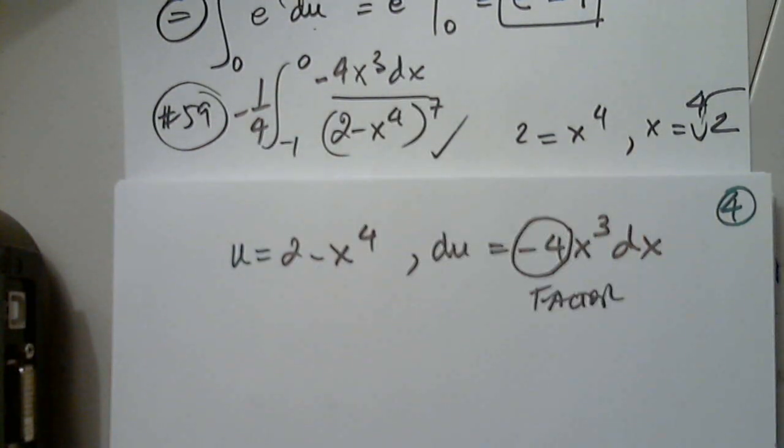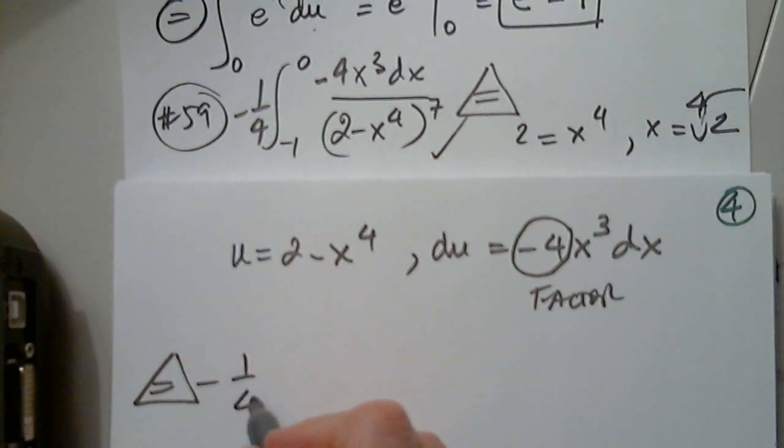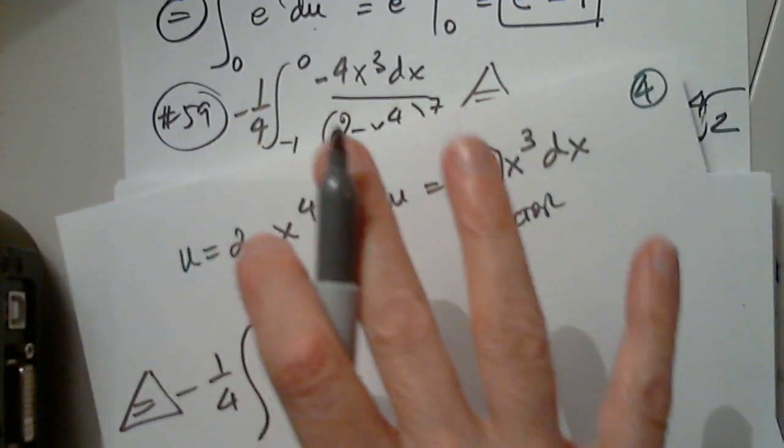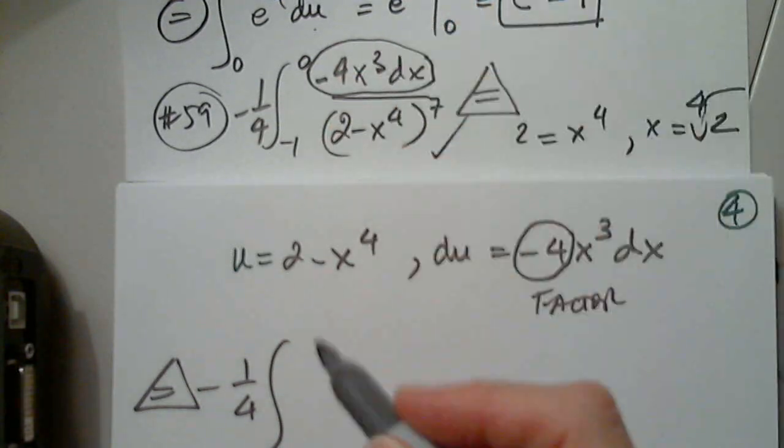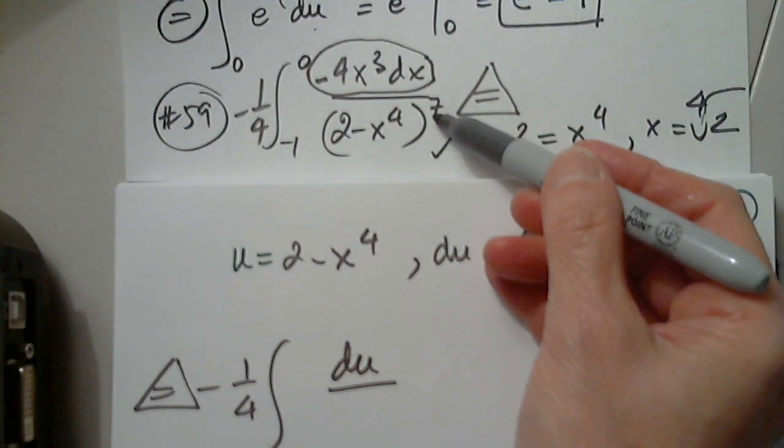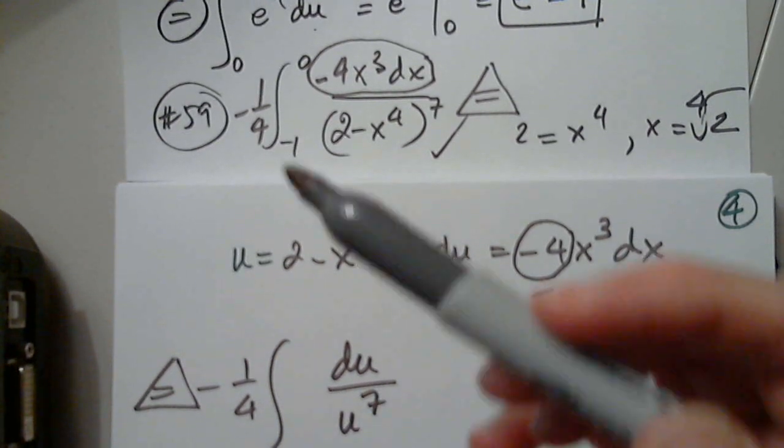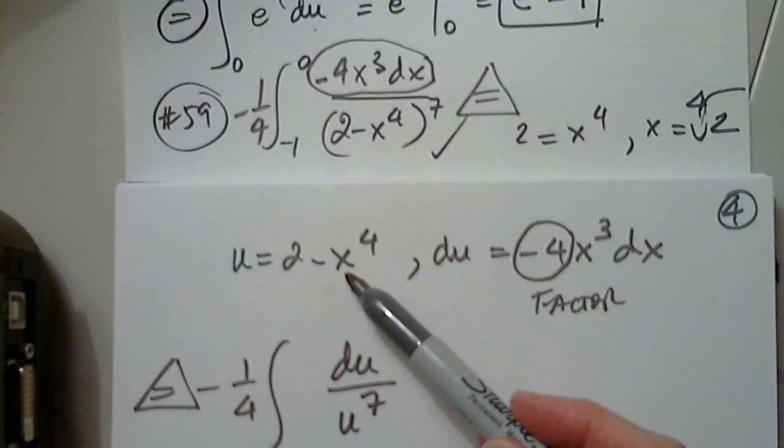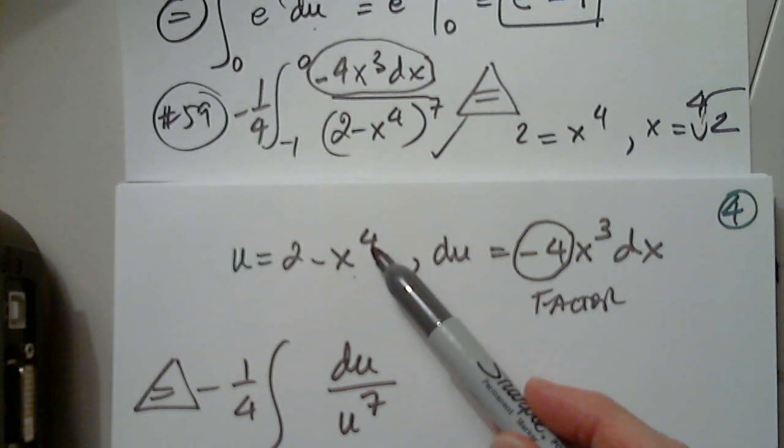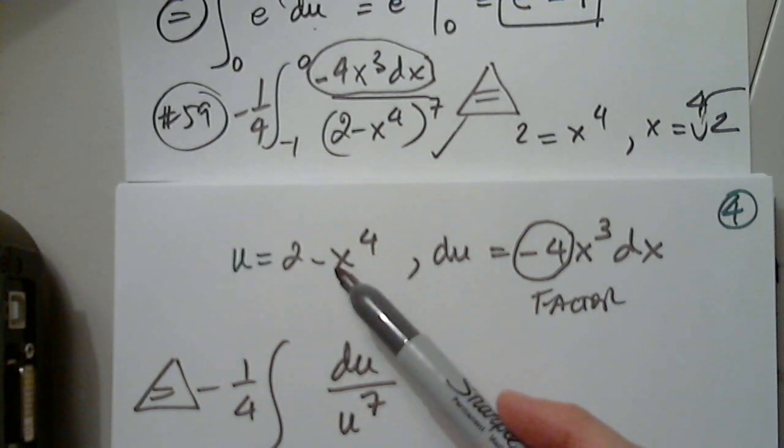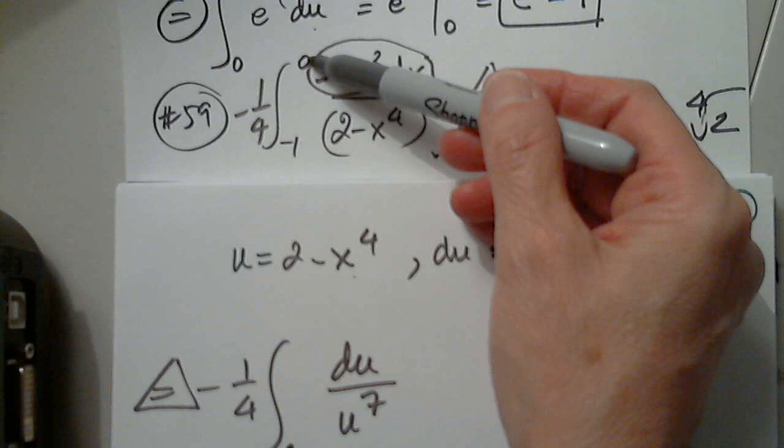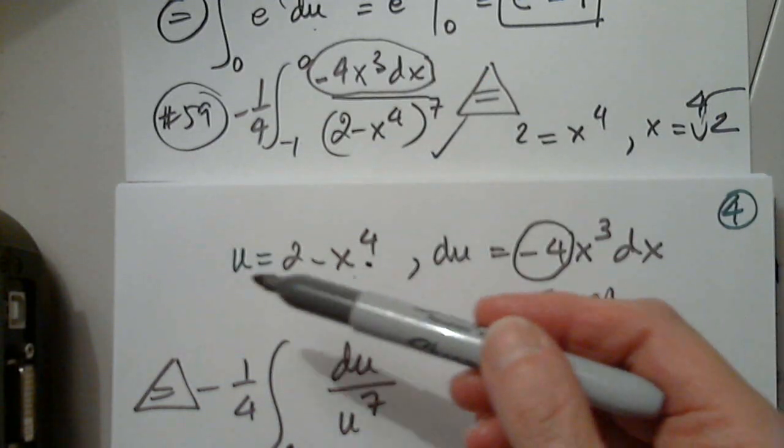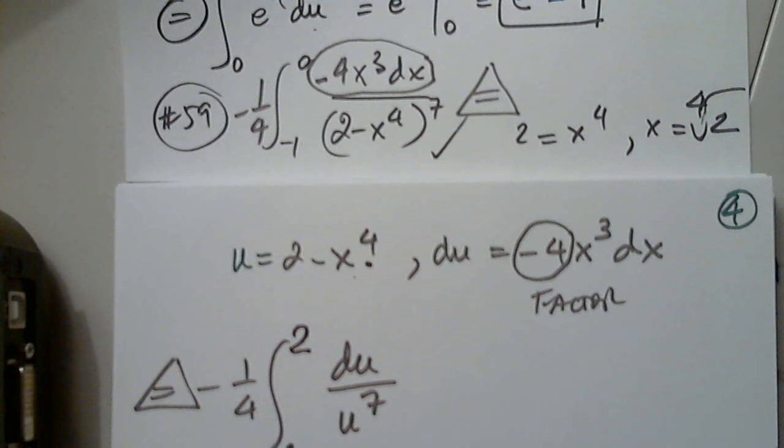So, then, I have negative 1/4 in front. Do not copy the limits of integration, please. This is du, and this is u to the 7th. Now, when x is negative 1, negative 1 to the 4th is positive 1. 2 minus 1 is 1. So, when the upper limit for x is 0, 2 minus 0 is 2. The upper limit for u will be 2.